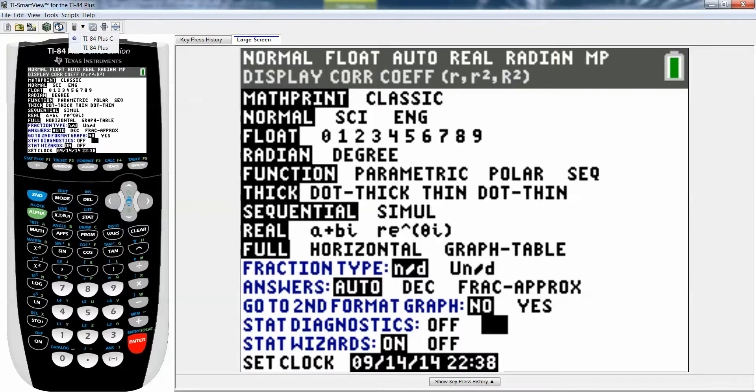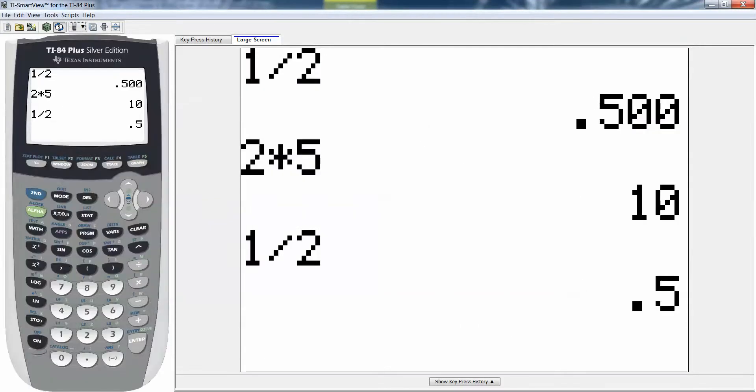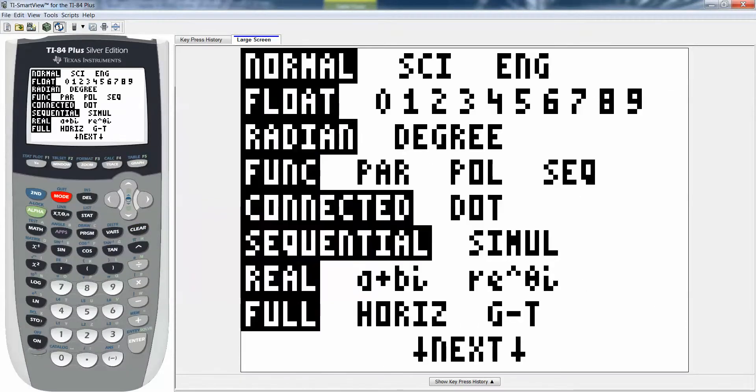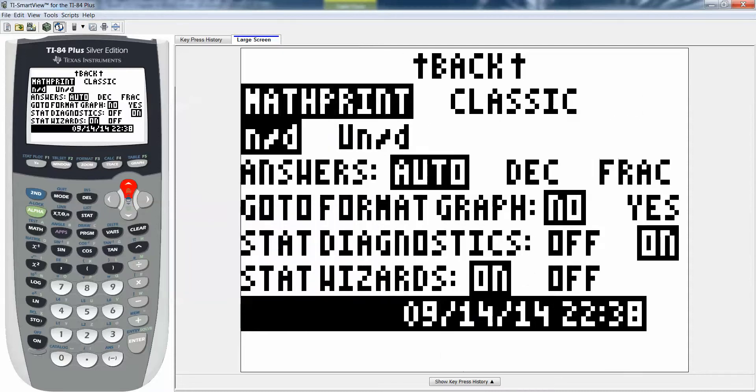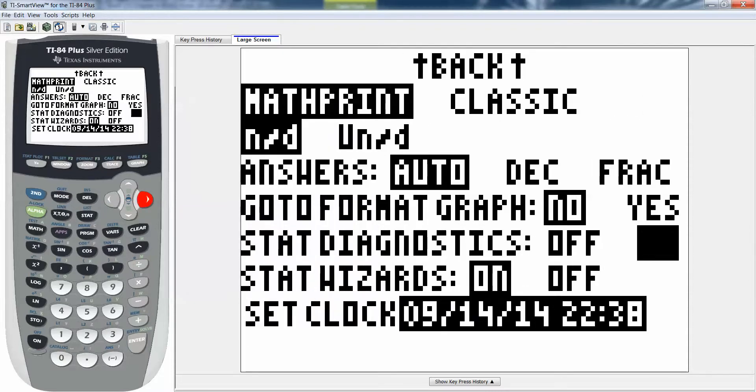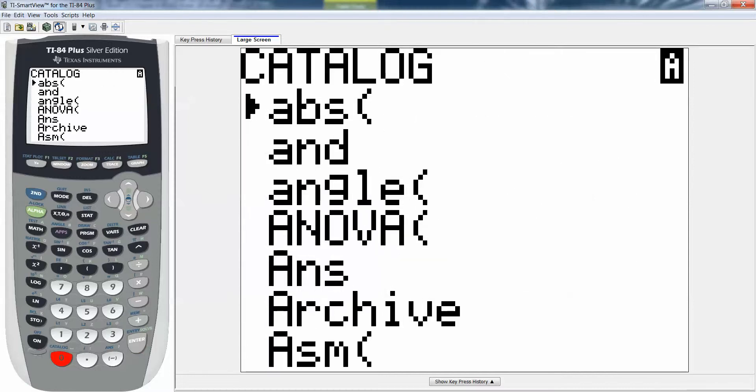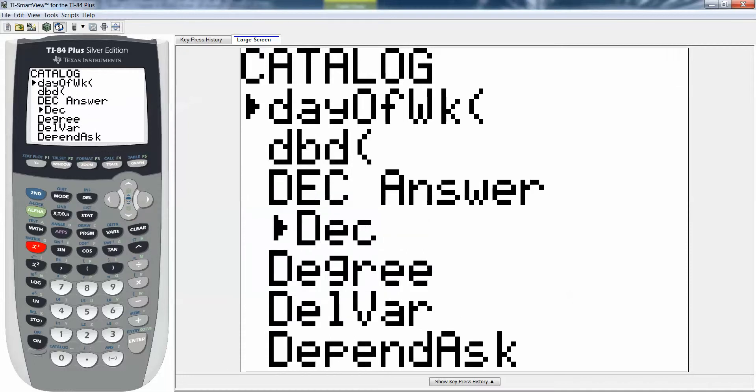Let me go to the other calculator just so you can see it there too. If I went to mode again, I have the newest operating system, so there it is - stats diagnostics. See how it's on? That's what you want. The other way to do it is the same way we did the other calculator, which is catalog, and then you scroll down until you hit diagnostic on.